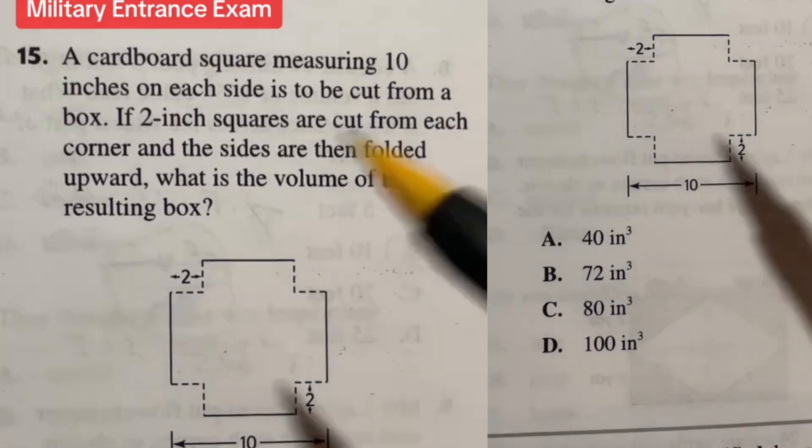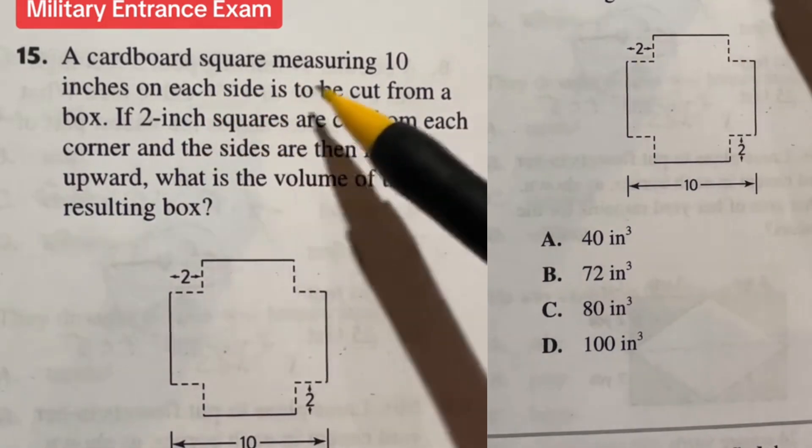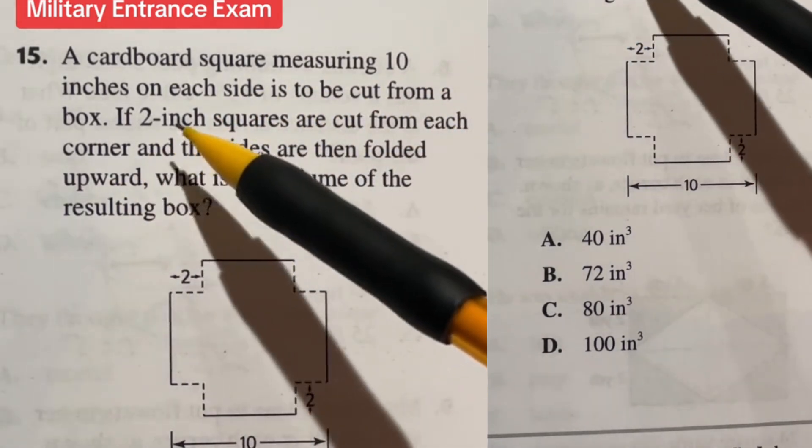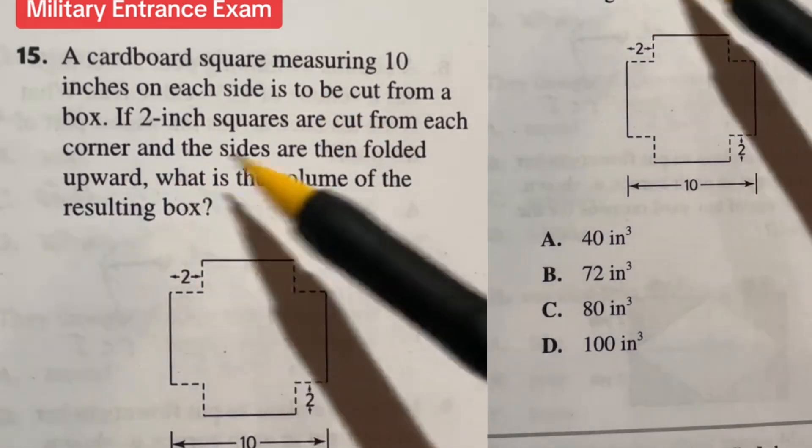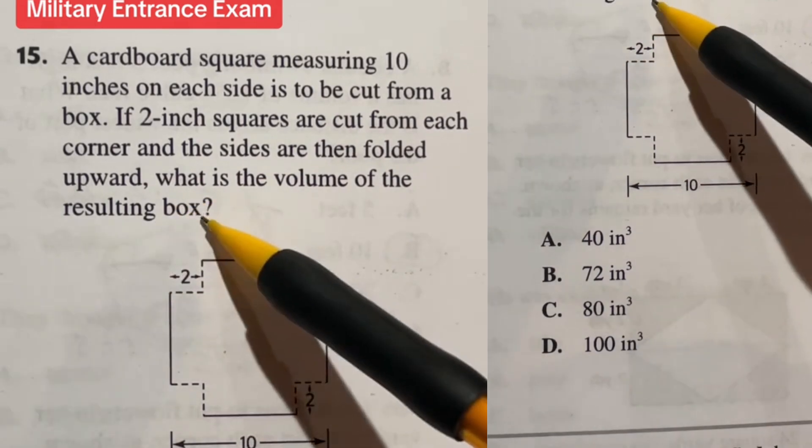For number 15 on the ASVAB it says that a cardboard square measuring 10 inches on each side is to be cut from a box. If two inch squares are cut from each corner and the sides are then folded upward, what is the volume of the resulting box?